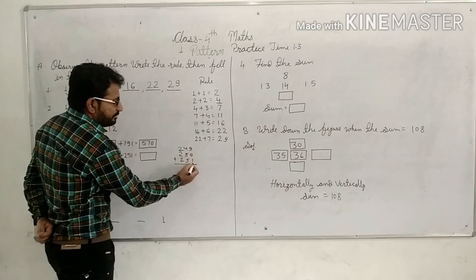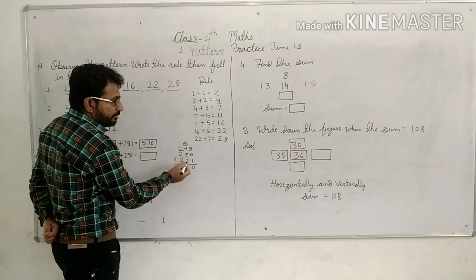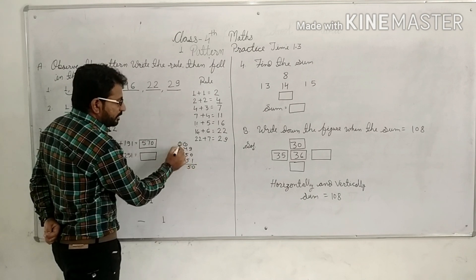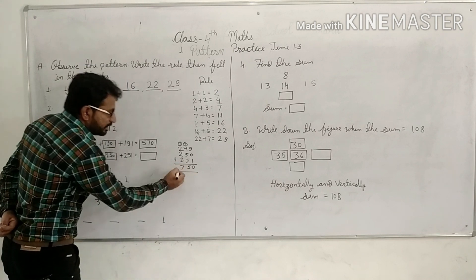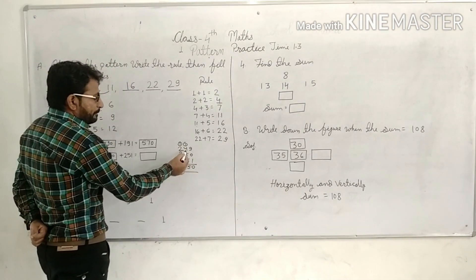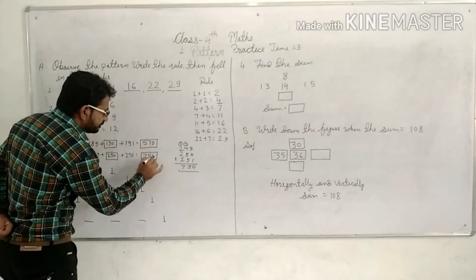1 plus 1, 9 plus 1 is 10, 1 carry. 5, 5, 10, 15, 1 carry. 1, 2, 3, 2, 5, 2, 7. 750. Okay, next one.